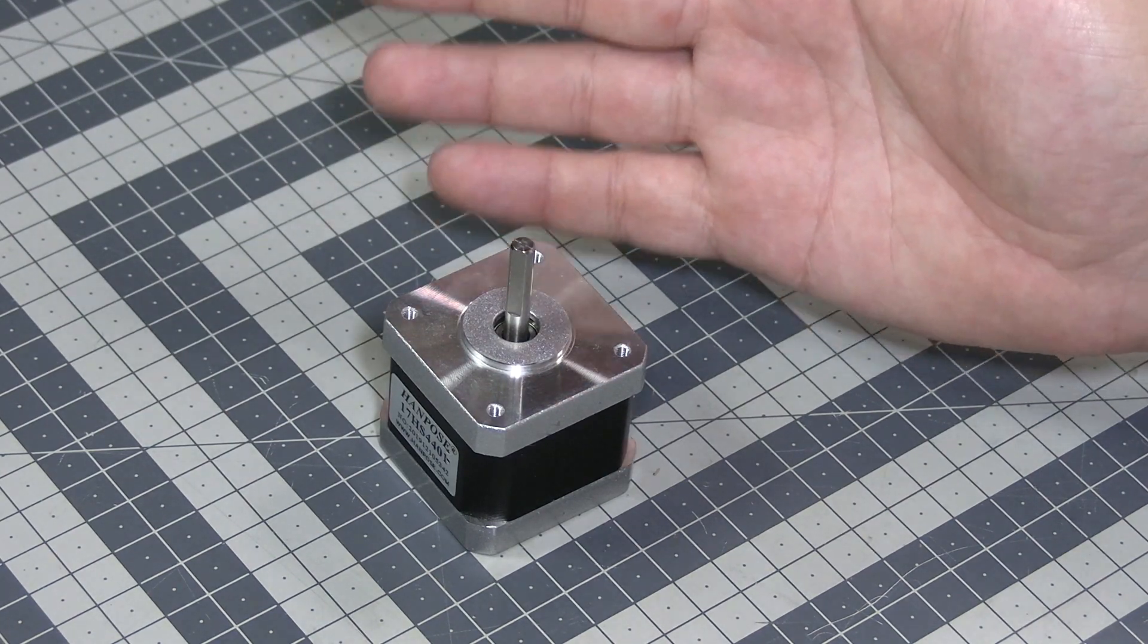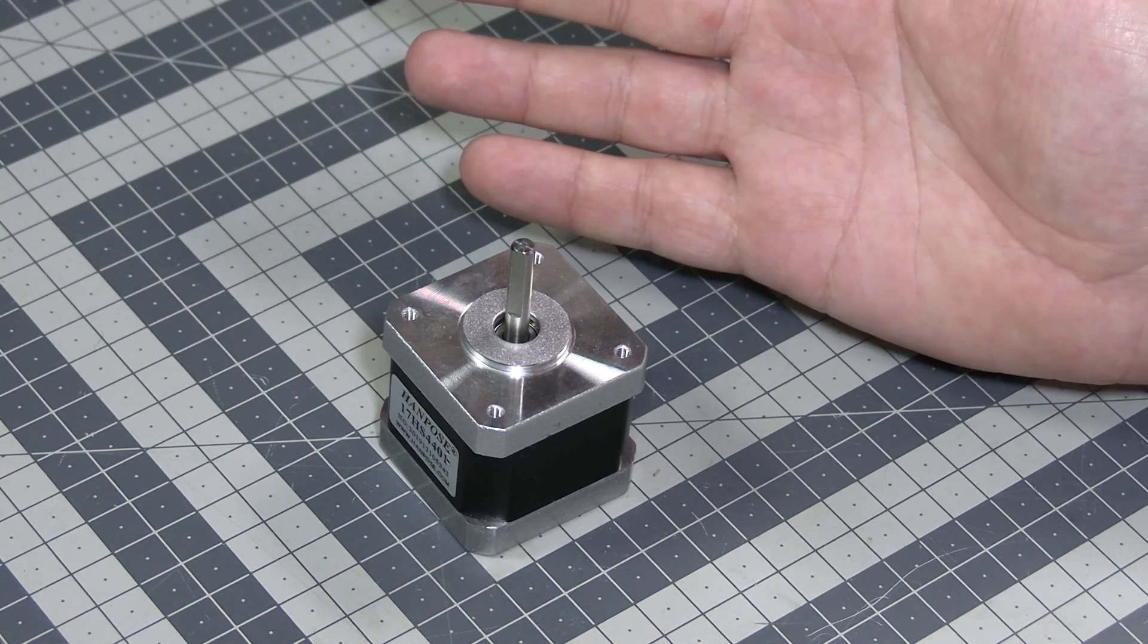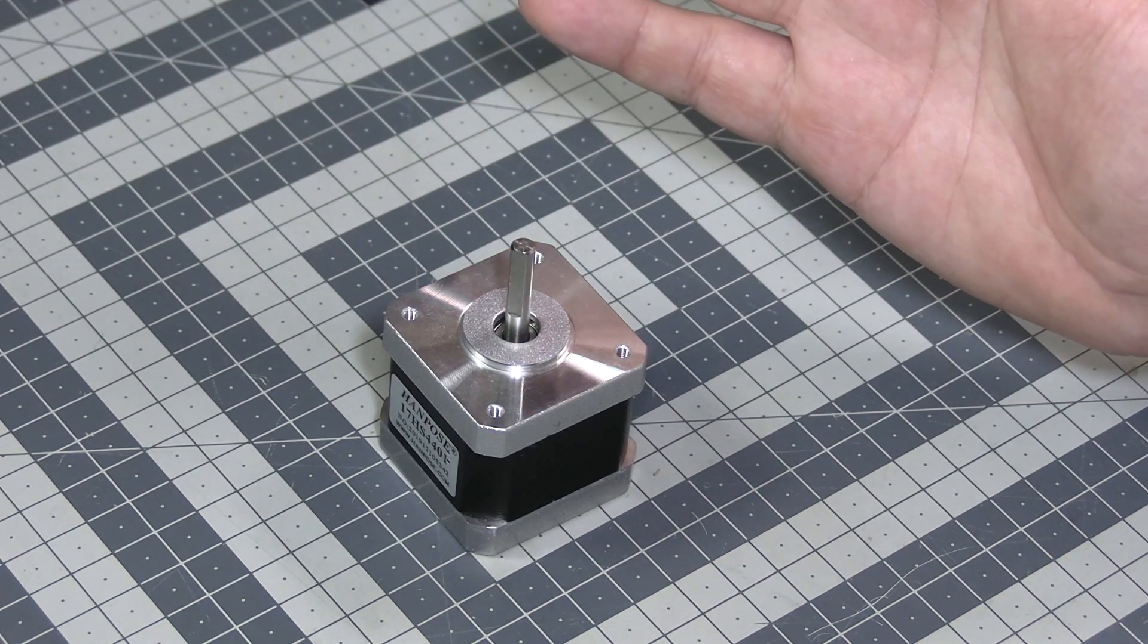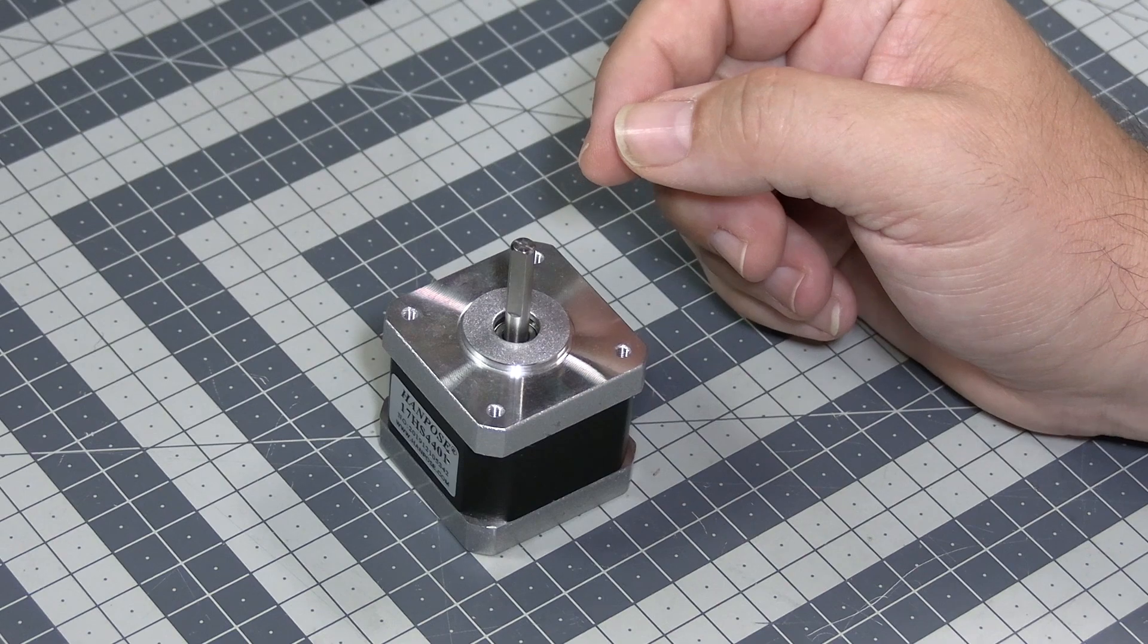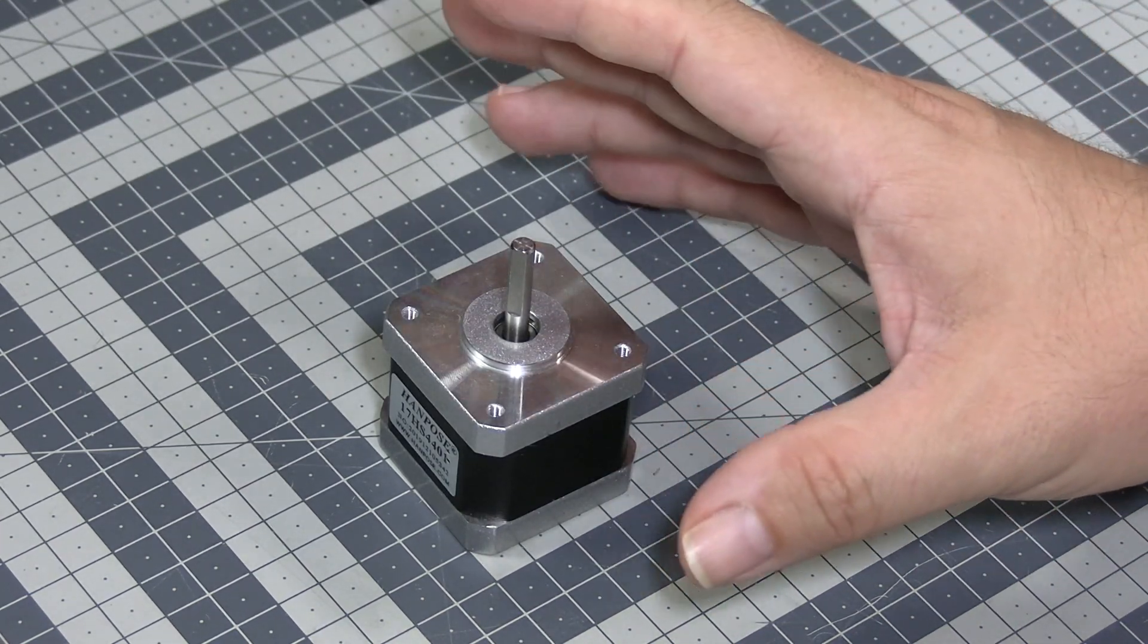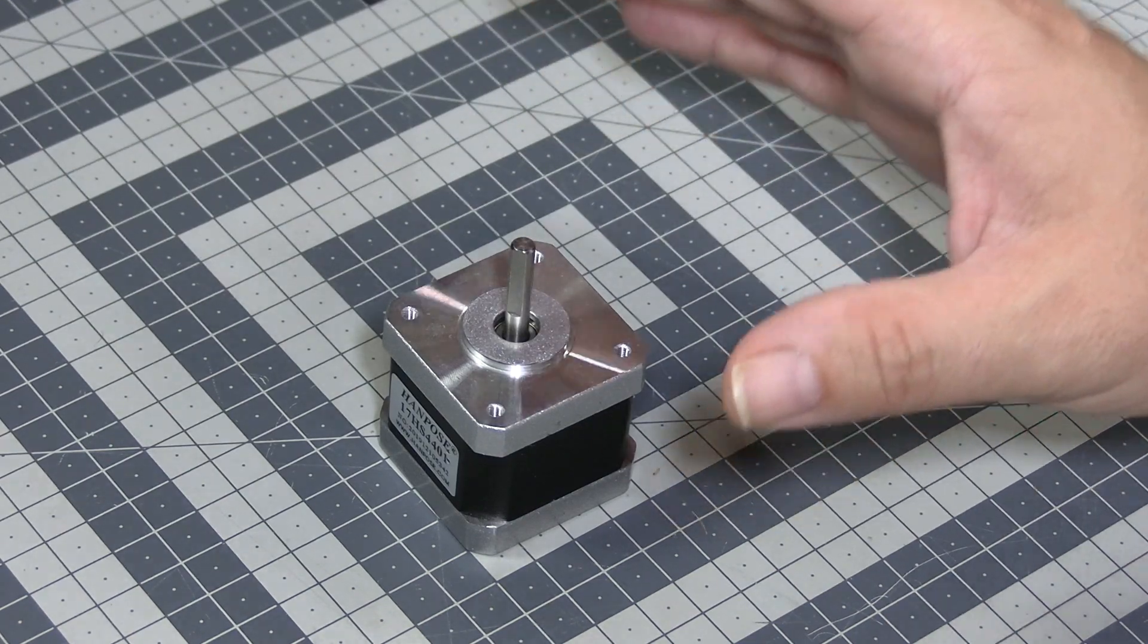How much is one step? Depends on the motor. There are 100 steps per revolution, 200 steps per revolution, even 400 steps per revolution, and don't even get me started about the microstepping possibilities of those things.